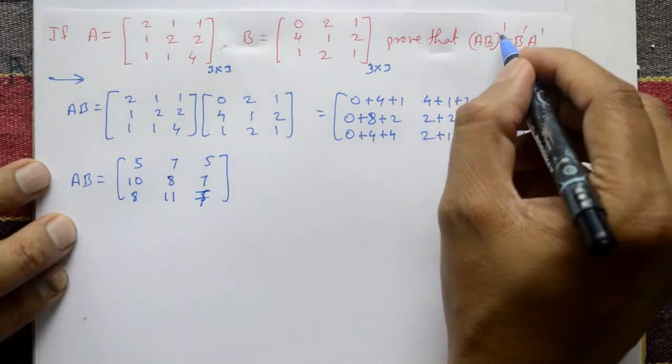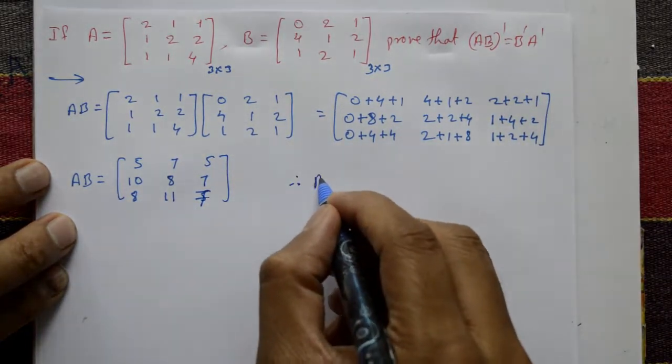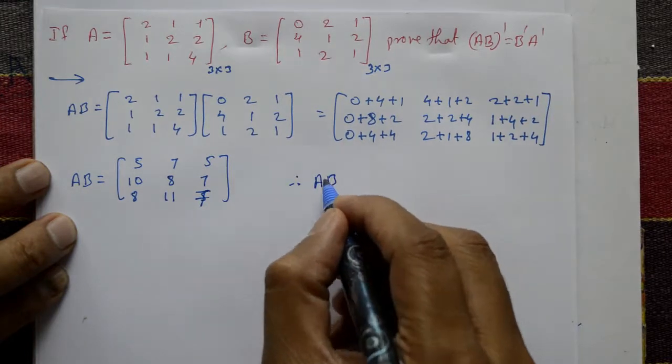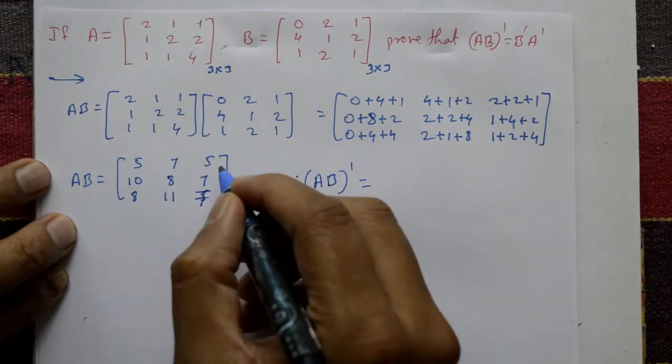Now A into B whole dash means transpose of the resulting matrix.